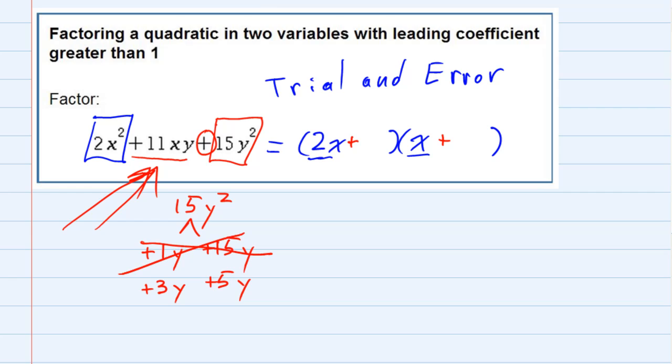So let's try the 3y and the 5y. If I put the 3y here and the 5y here, we'll have to try this combination, which gives us a 3xy. And then on the outside gives us a 10xy. Again, unfortunately, not adding up to our 11xy. But there's one more possibility. We have to switch the 3 and the 5.